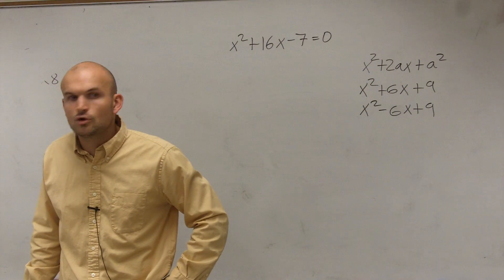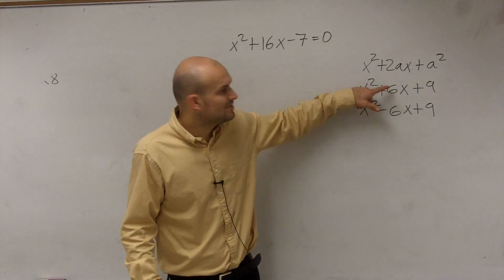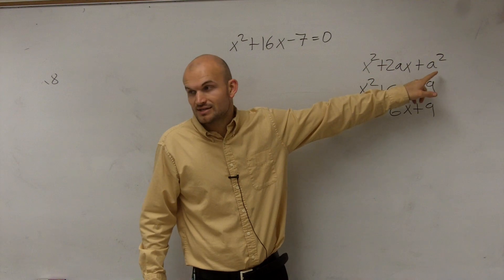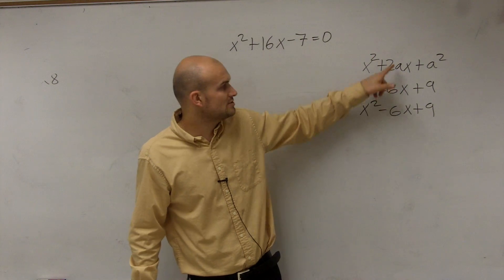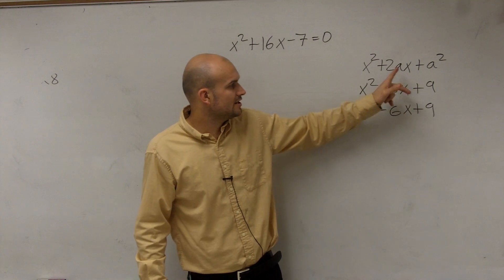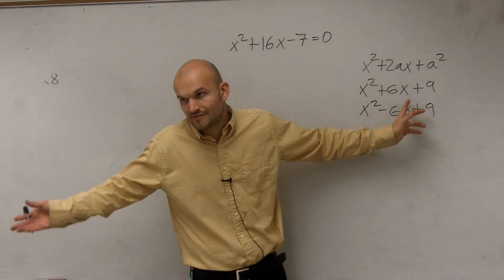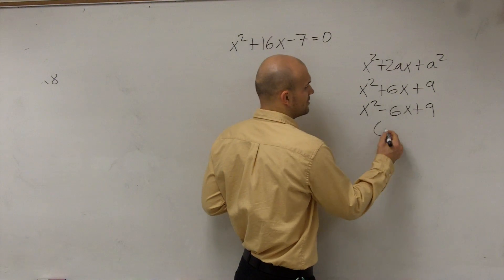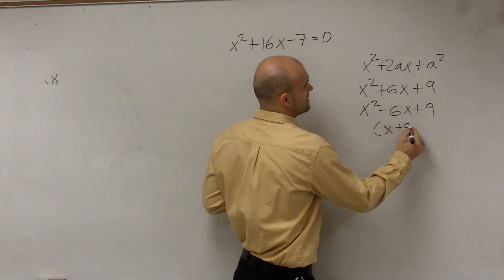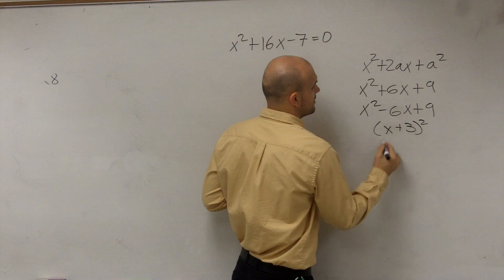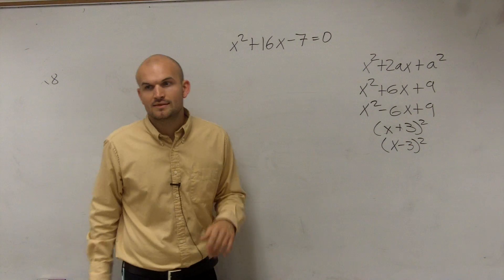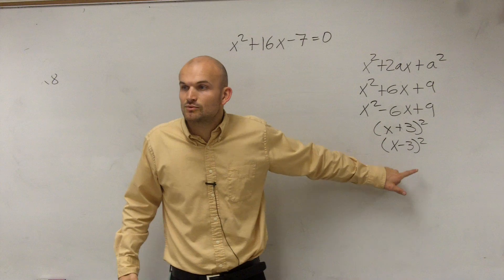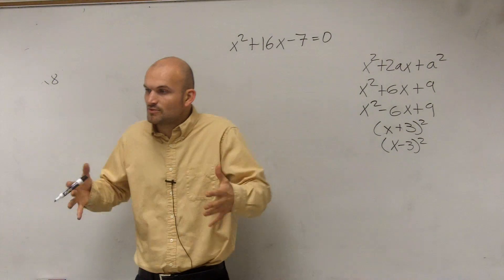Now, why are perfect square trinomials so cool or so helpful for us? The reason why they're helpful for us is because these are very easily factorable. Because what we notice is, look, a squared is 9, and then 2 times a - a squared is 9, so therefore a is 3. You can see the middle term is 2 times 3, which is 6. Here, a is 3. And here, you could also have it as negative, or 2 times negative a would also work. But the reason why these are so important is because these are factorable. Perfect square trinomials are factorable. And the way they're factorable is you could write this as x plus 3 squared and x minus 3 squared. So it's really helpful to use these because they're factorable - and not even factorable, but they're factorable to what we call a perfect square, a binomial multiplied by itself.